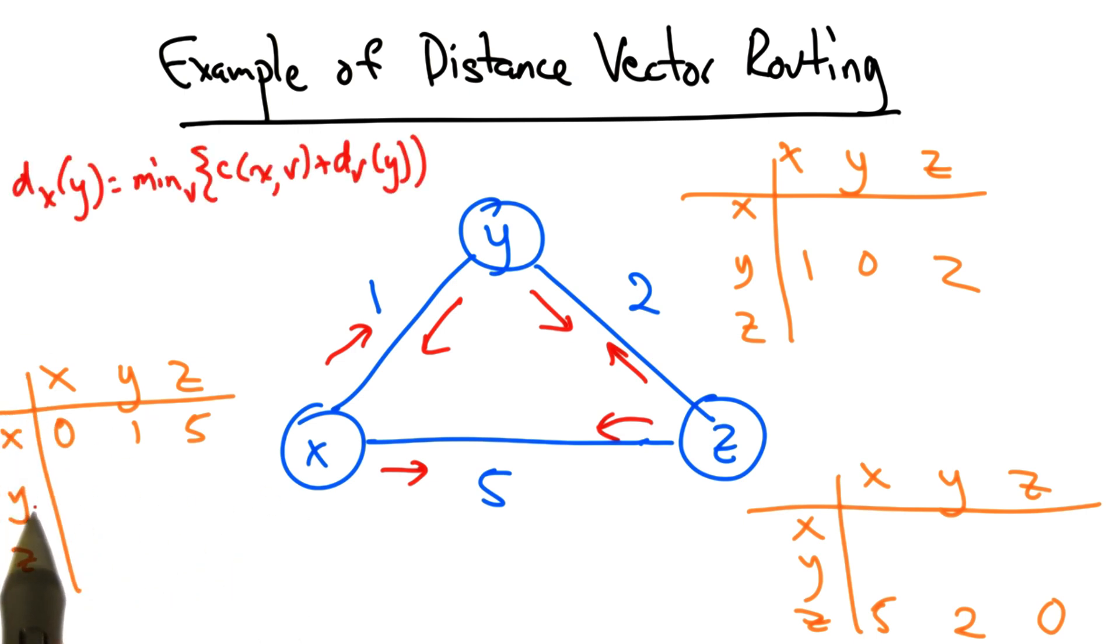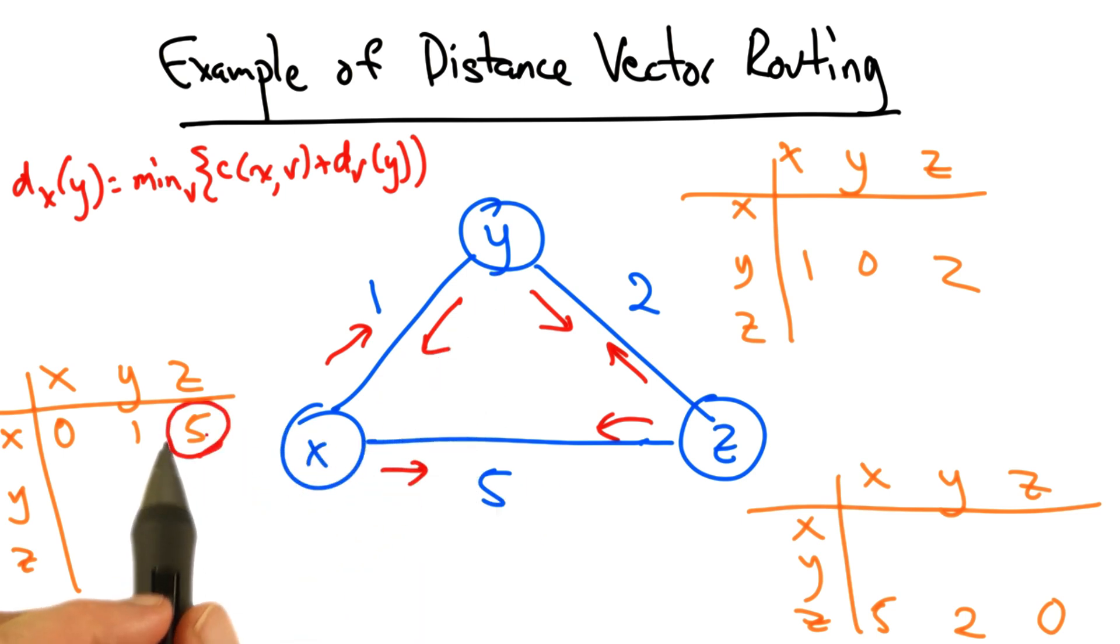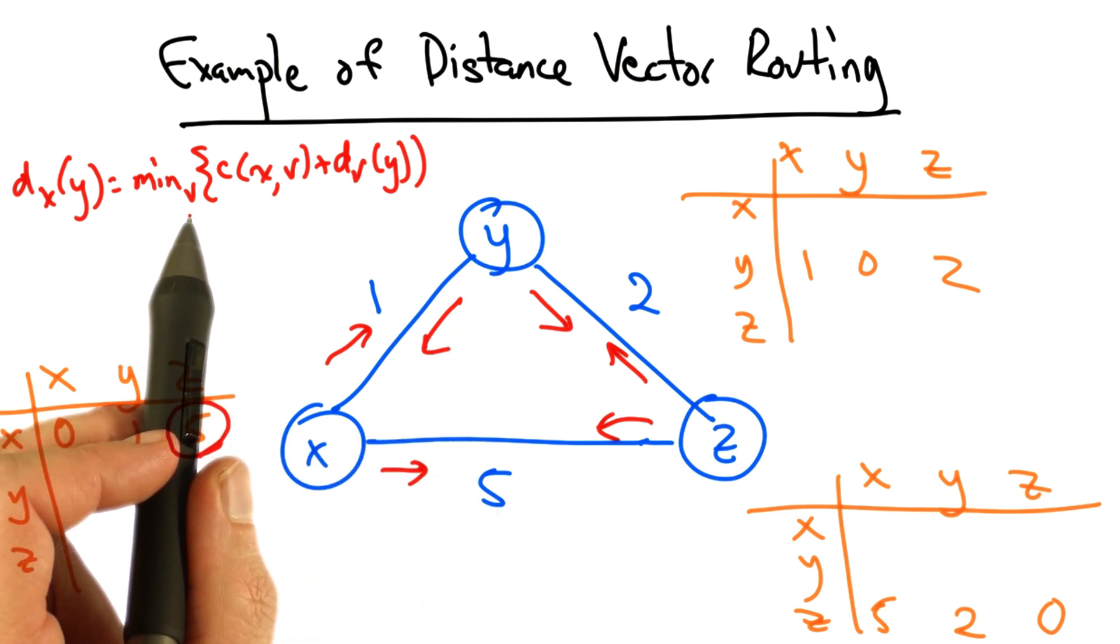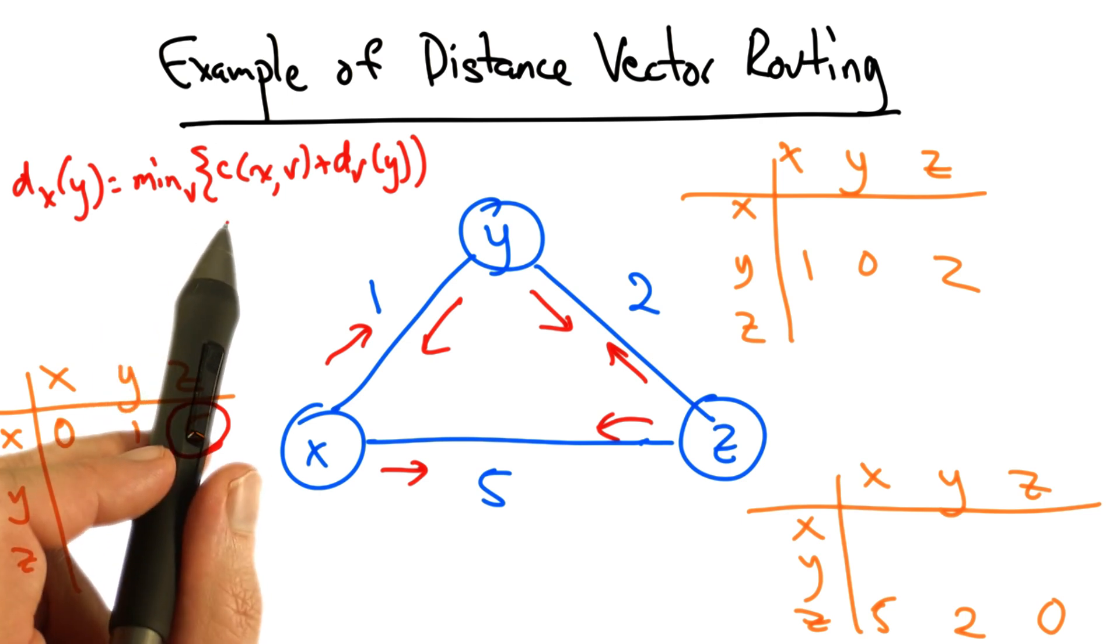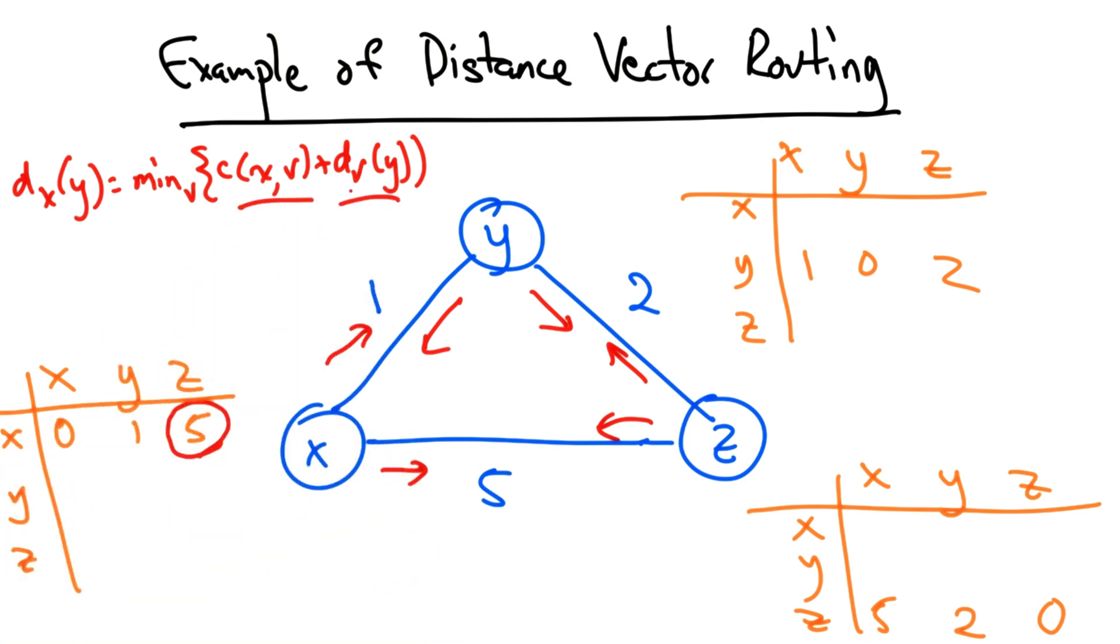Let's look at what happens when node x learns of y's distance vectors. In this case, the distance from x to z will be computed as the minimum of the sums of all distances to z through any intermediate node.